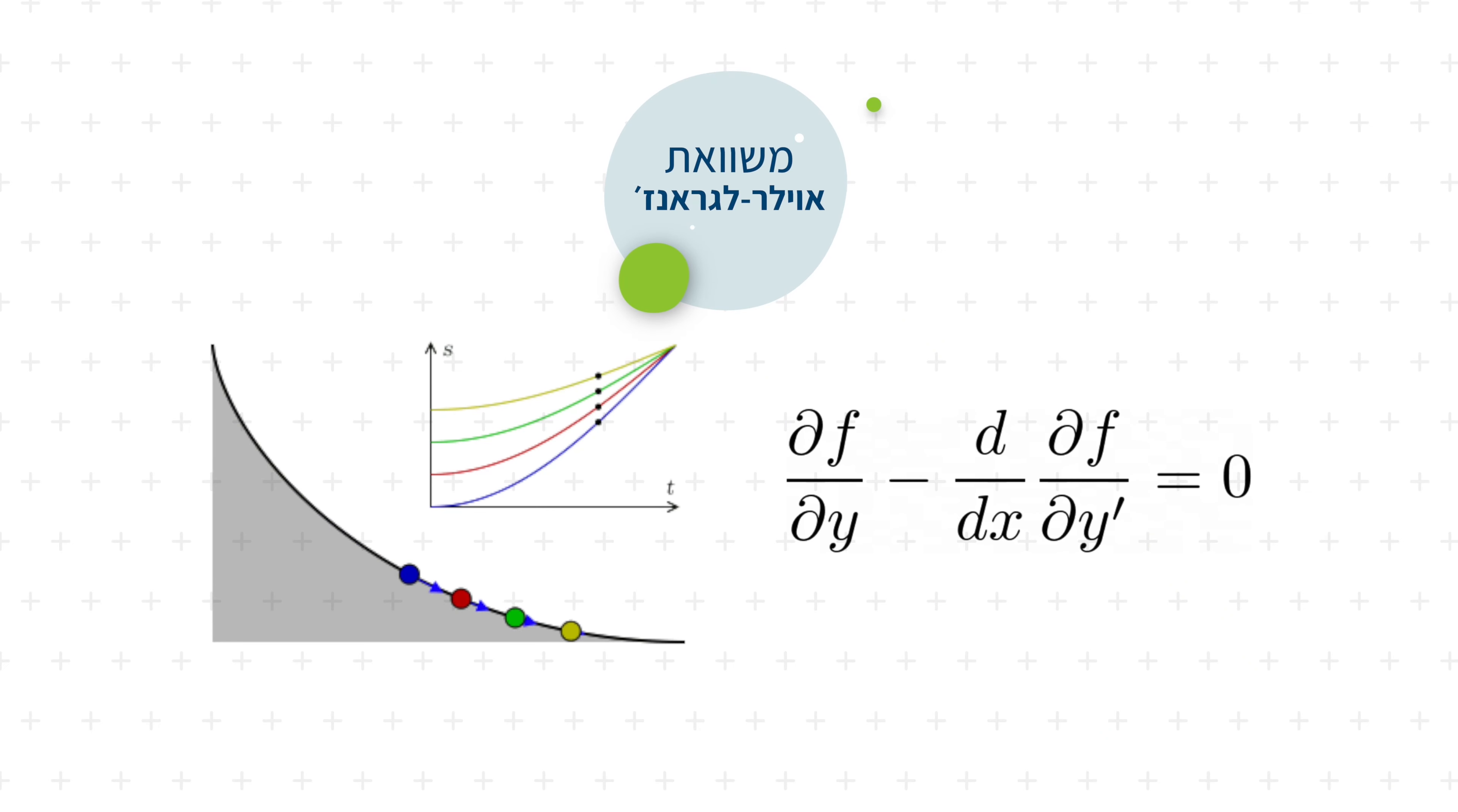Remember when Johann made fun of his brother's brachistochrone solution, saying it was too complicated? Well, his work is a big deal in math history. It paved the way for a new branch of math called the calculus of variations. Euler and Lagrange later developed it into what's now known as the Euler-Lagrange equation. Thanks for watching and I'll see you in the next video.